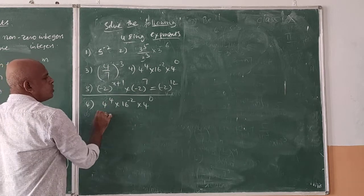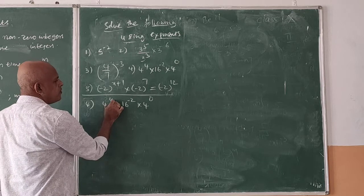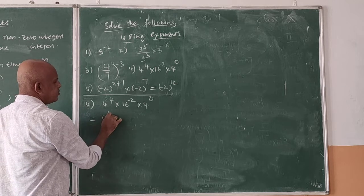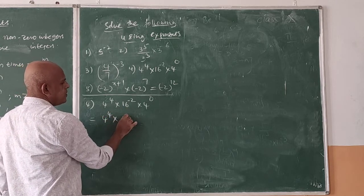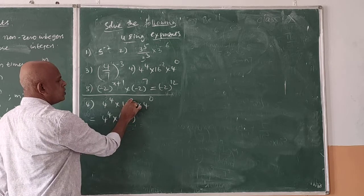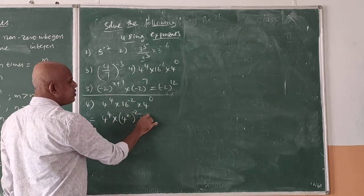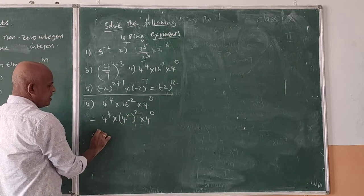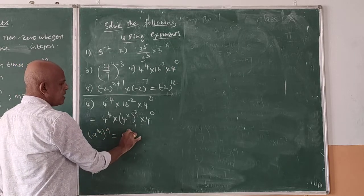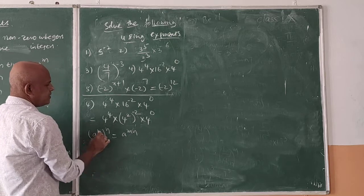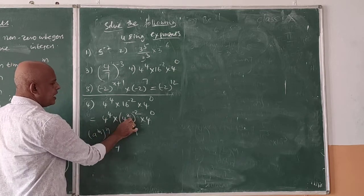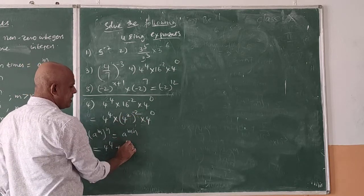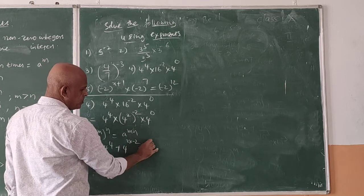The 4th problem: 4 to the power of 4. We will convert everything into a power of 4. So 4 to the power of 4 remains as it is, and 16 can be written as 4 squared, so 16 to the power of minus 2 equals 4 squared whole to the power of minus 2. Applying a to the power of m whole to the power of n equals a to the power of mn, we get 4 to the power of 2 into minus 2, which is 4 to the power of minus 4, into 4 to the power of 0.